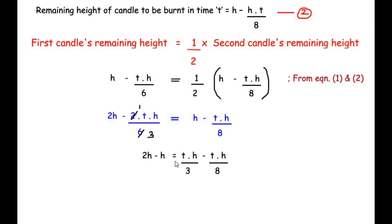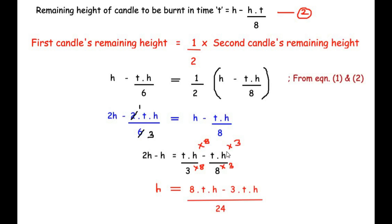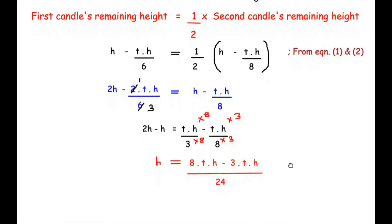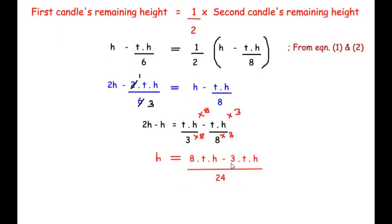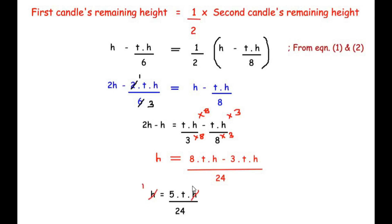Two h minus h gives h. On the right side, taking the common LCM of 24: multiplying the first term by eight over eight and the second term by three over three gives eight th minus three th over 24, which equals five th over 24. So h equals five th over 24. Dividing both sides by h, we get 1 equals 5t over 24.